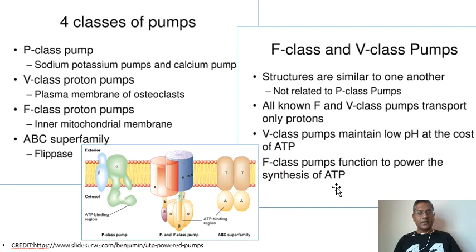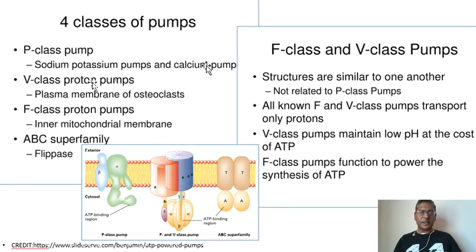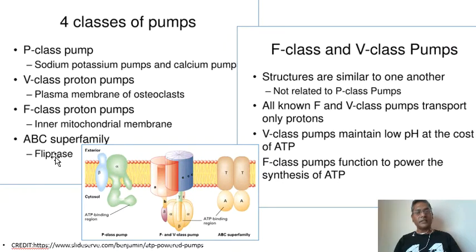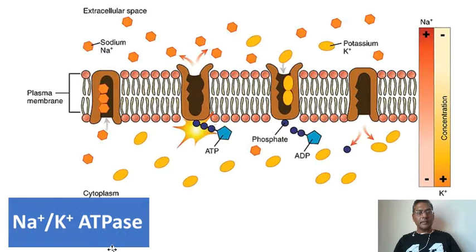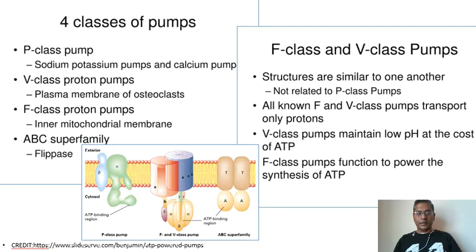Based on transport mechanism as well as genetic and structural homology, there are considered to be around four classes of ATP-driven ion pumps. These are: P-class pumps — examples include sodium-potassium pumps and calcium pumps; V-class pumps — the plasma membrane of osteoclasts has such pumps; F-class proton pumps — found in the inner mitochondrial membrane; and the ABC superfamily — an example is Flippase, which flips a phospholipid from the inner leaflet to the outer leaflet or vice versa.